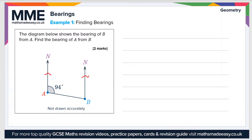The diagram below shows the bearing of B from A. Find the bearing of A from B. We're dealing with two parallel lines here. So 94 degrees — the bearing of B from A — and this angle here, let's call it X, are known as co-interior or allied angles.